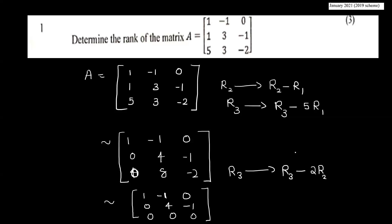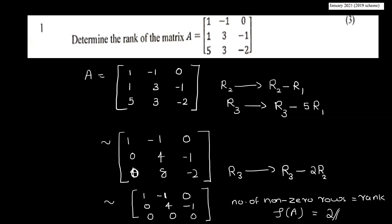Now let's write the non-zero rows. The number of non-zero rows equals the rank. If we count, the rank of A equals 2, since there are two non-zero rows.